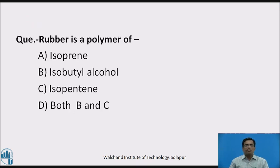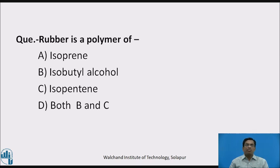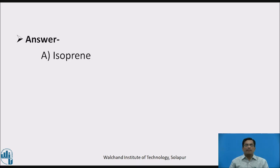Pause this video and answer this question: Rubber is a polymer of — (a) isoprene, (b) isobutyl alcohol, (c) isopentene, or (d) both b and c. Welcome back. The answer is (a), isoprene.